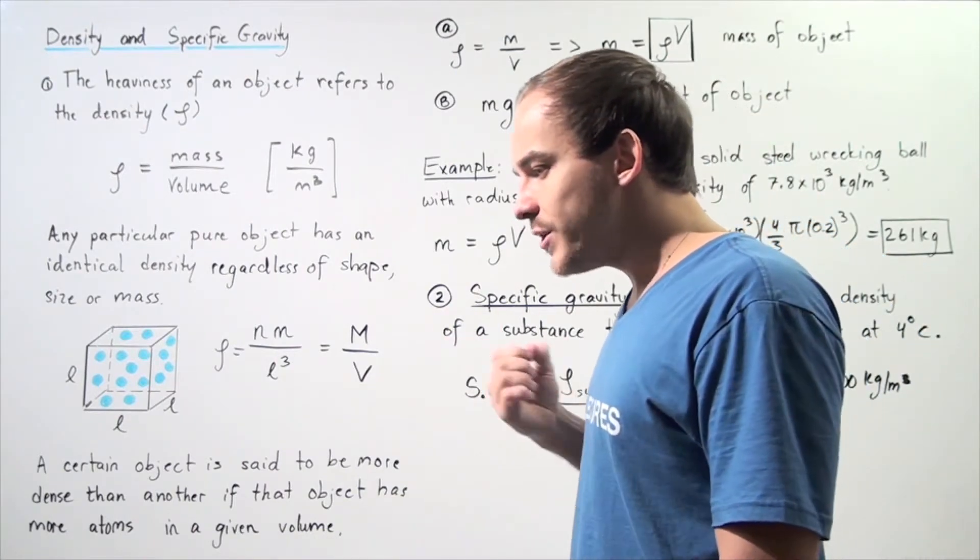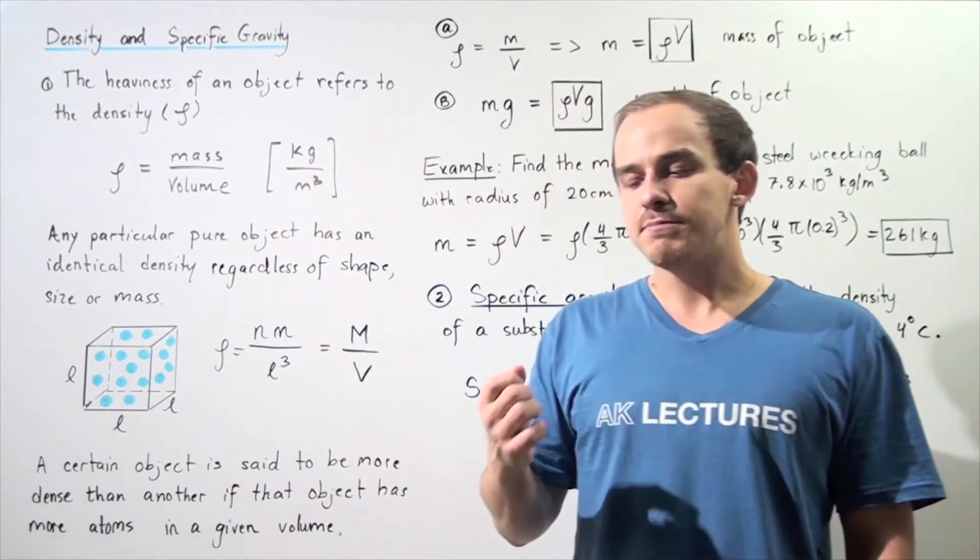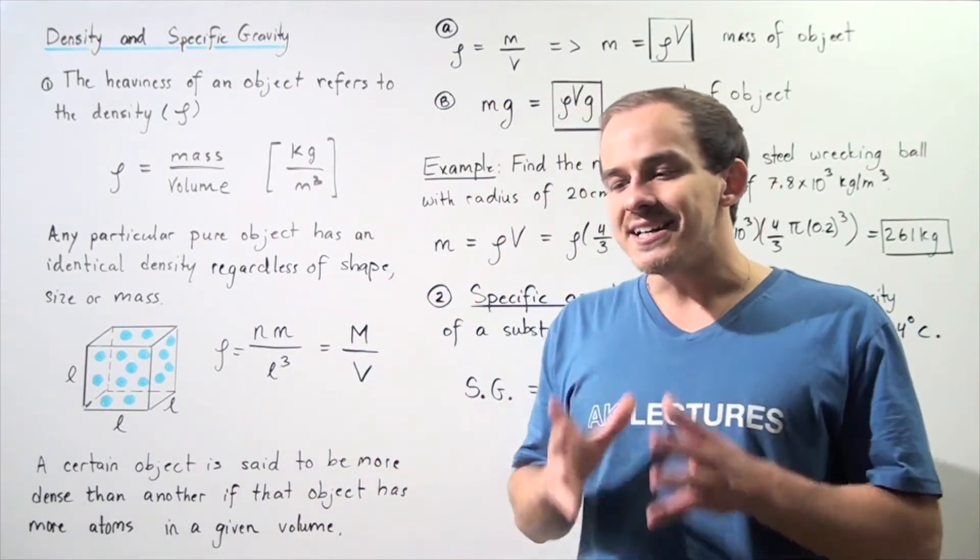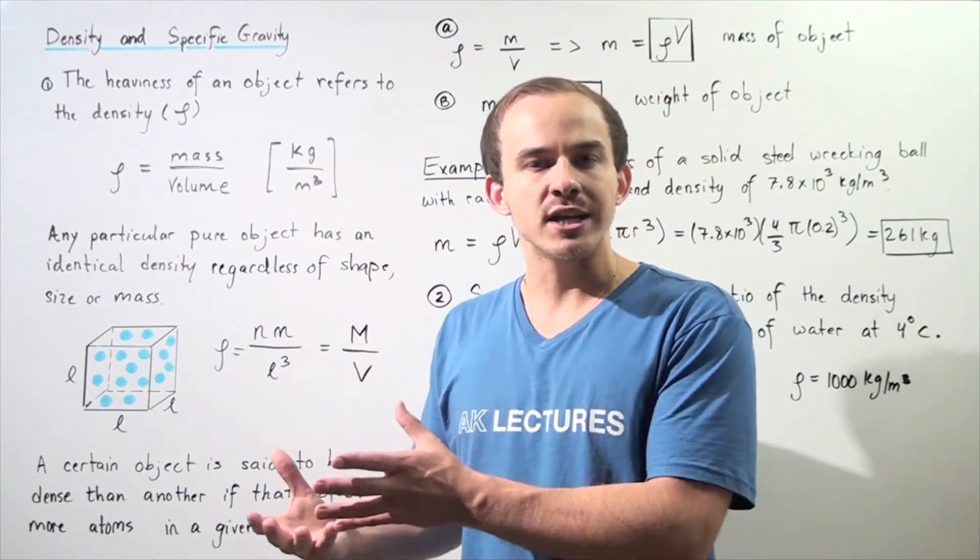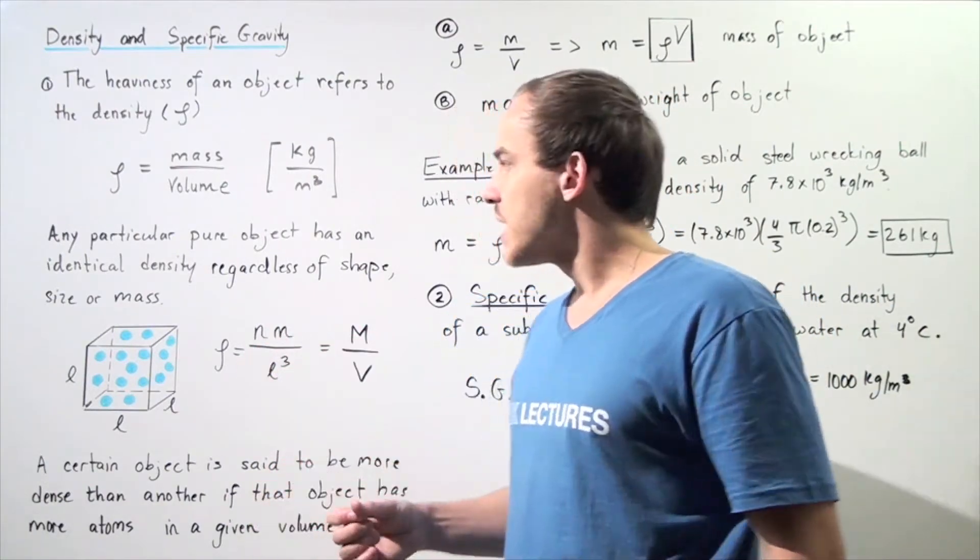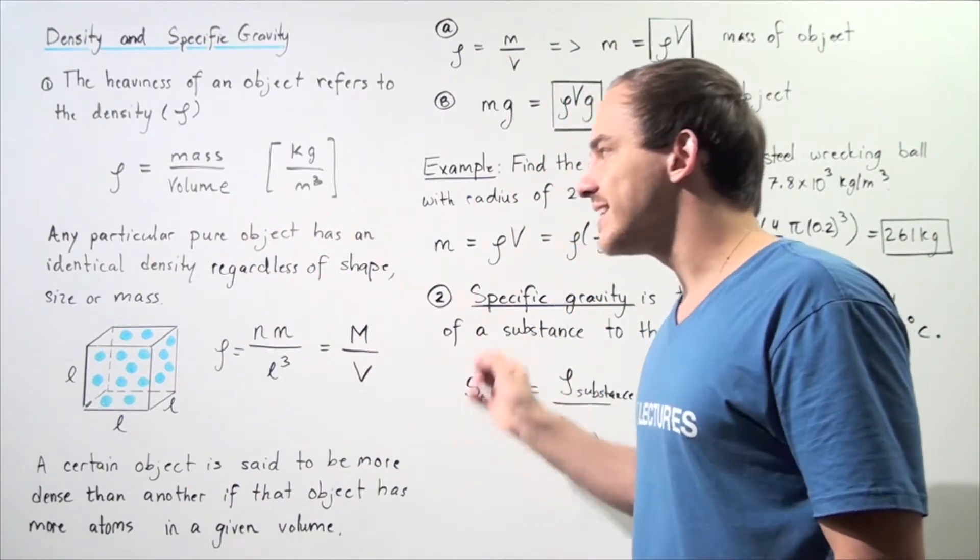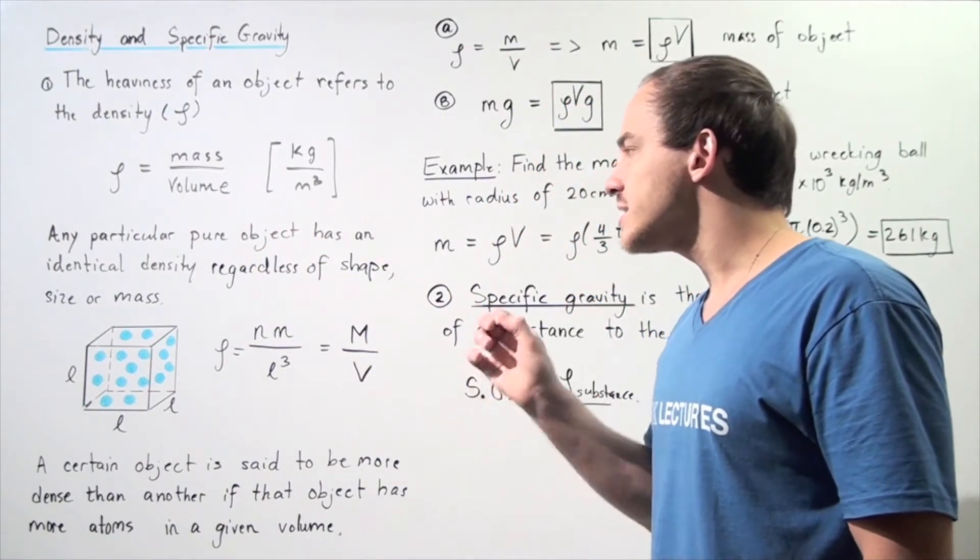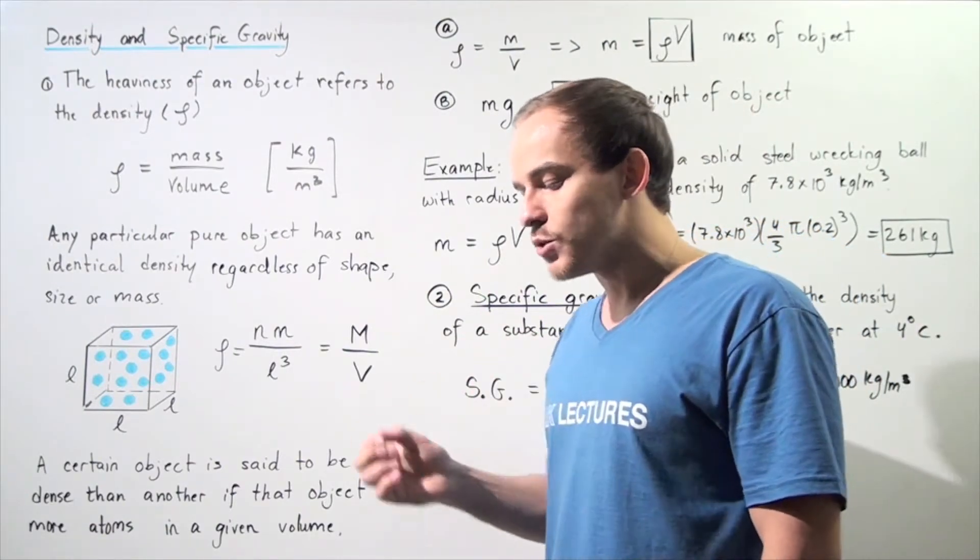We said that density is an intensive property. What that means is density does not depend on the quantity of object we are using. Any particular pure object has an identical density regardless of the shape, size, and mass of the object.